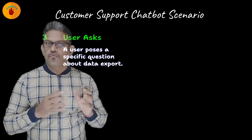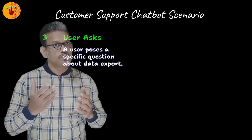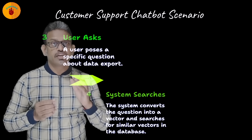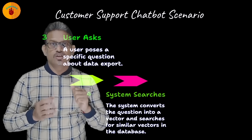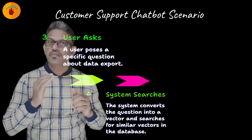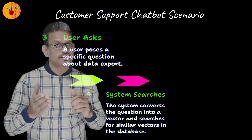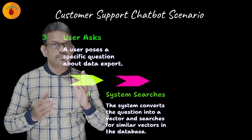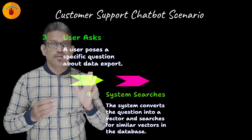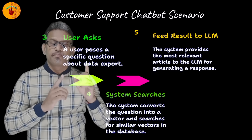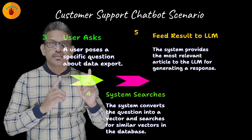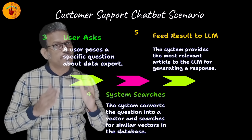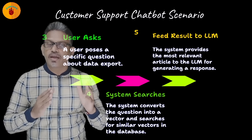Third step: a user asks, 'How do I export my data in CSV format?' The fourth step is what the system does — it converts the question into a vector, searches the vector DB for the most similar vectors, and finds relevant articles such as 'How to export data PDF or CSV' — a perfect match. The fifth step: retrieve the result and send it to the LLM. Provide the retrieved article as context, and the LLM responds based on this document: 'Here is how to export CSV.'